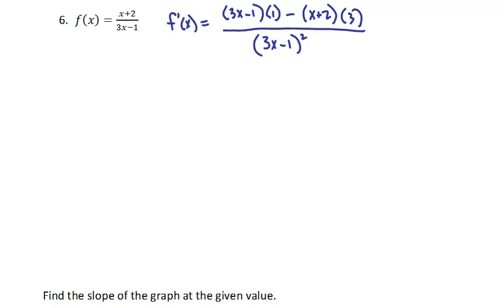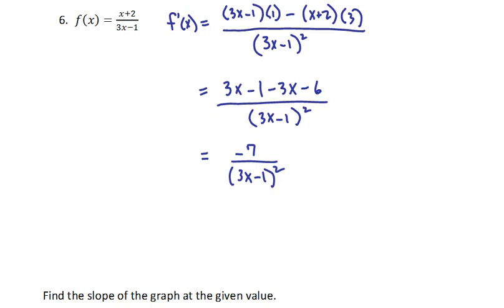All the differentiation is finished here. We can simplify the numerator, so the left side is just 3x - 1, the right side is -3x - 6, all over (3x - 1)². You end up with -7/(3x - 1)².